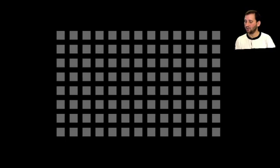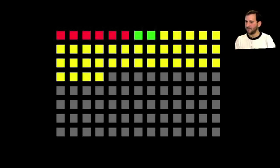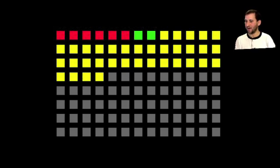Let me show you. These gray blocks represent blocks of data on your hard drive — they're all empty right now. Let's say we write three files to the drive: the first is represented by red blocks, a small one by green blocks, and a larger one by yellow. Now what happens if we delete the green file? Those two blocks are freed up and we still have the red and yellow files.